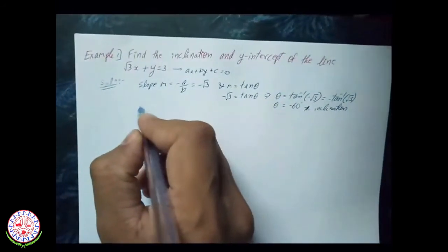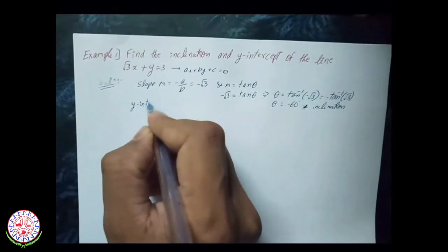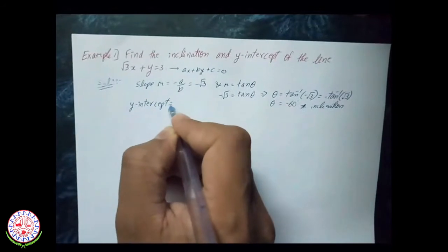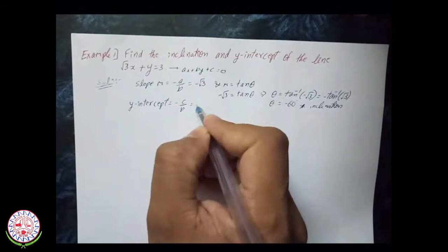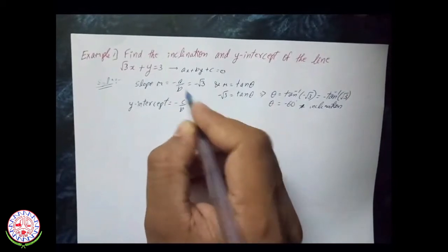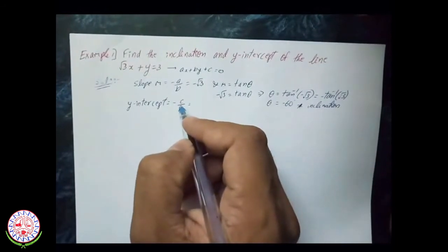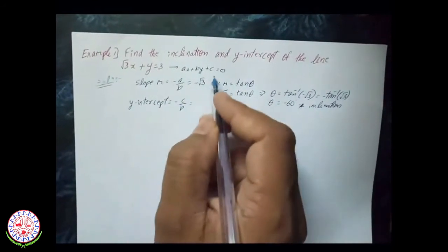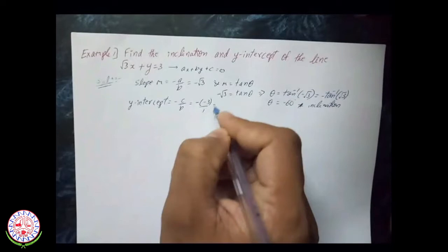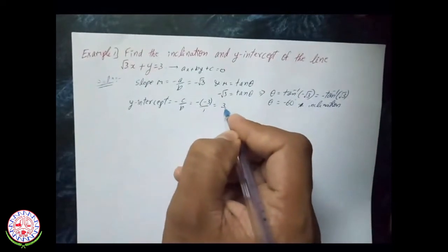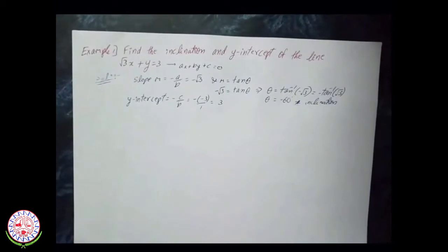Next we find the y-intercept. The y-intercept is given by −c/b. Comparing the equation, c is on the LHS; bring it to the RHS so it becomes −3. Therefore −(−3) divided by 1 (which is b) equals +3. So the inclination θ = −60° and the y-intercept = +3.